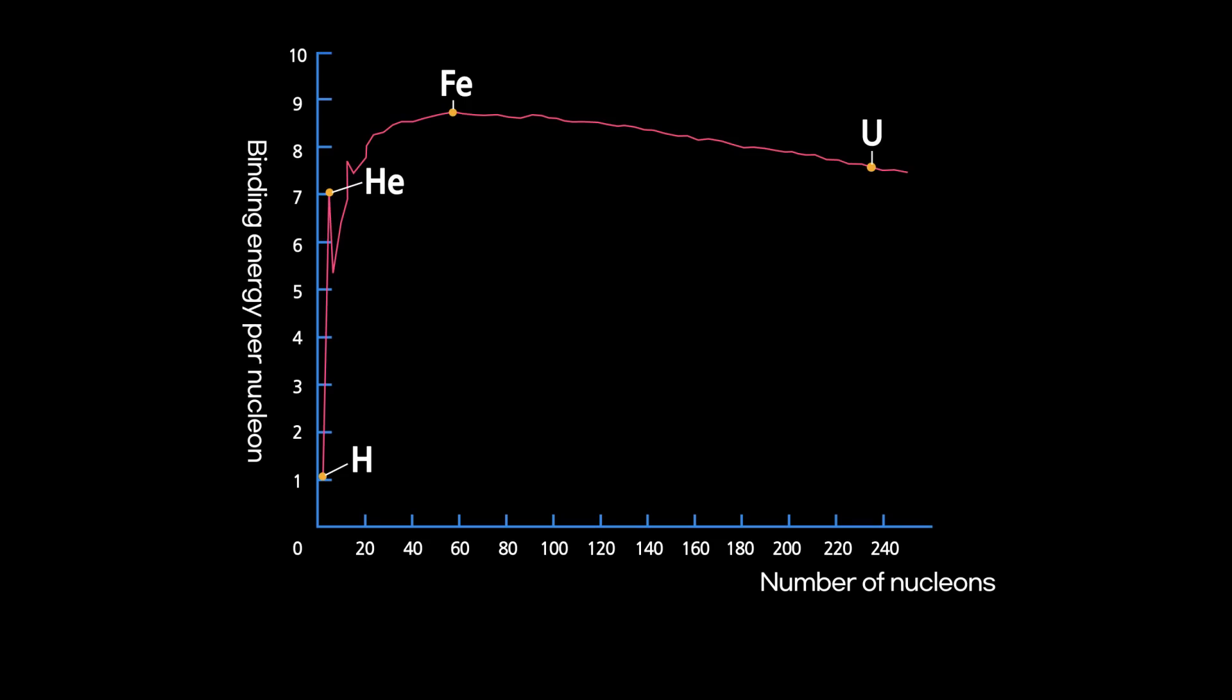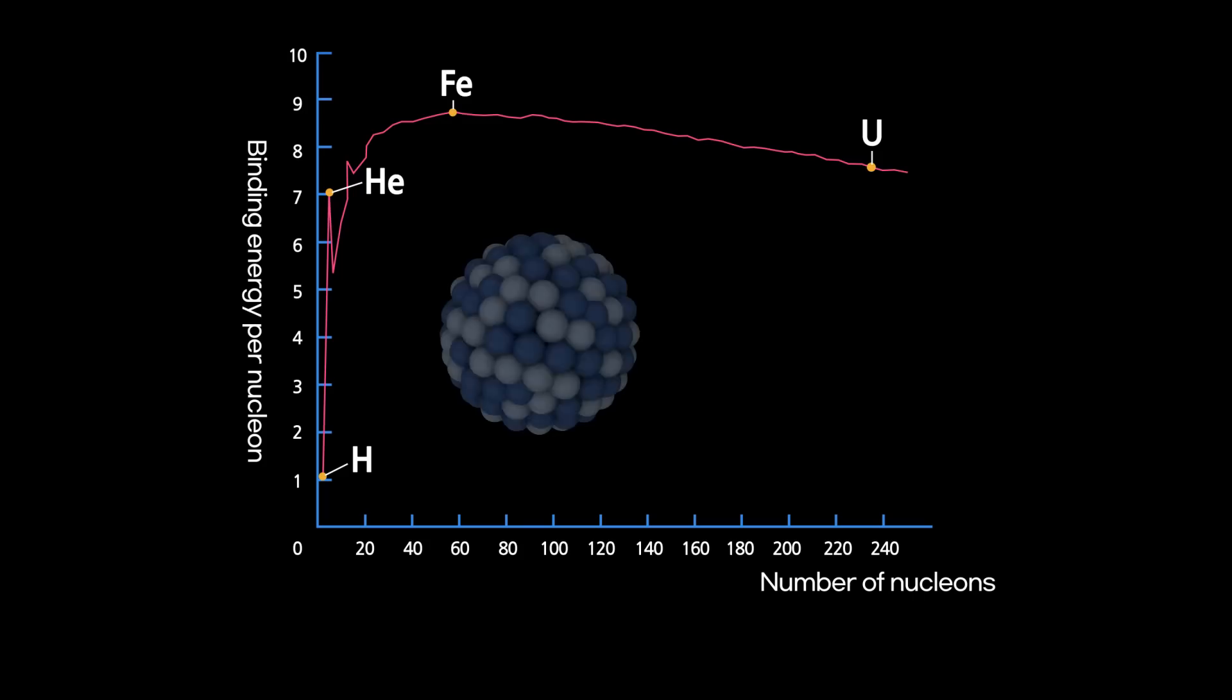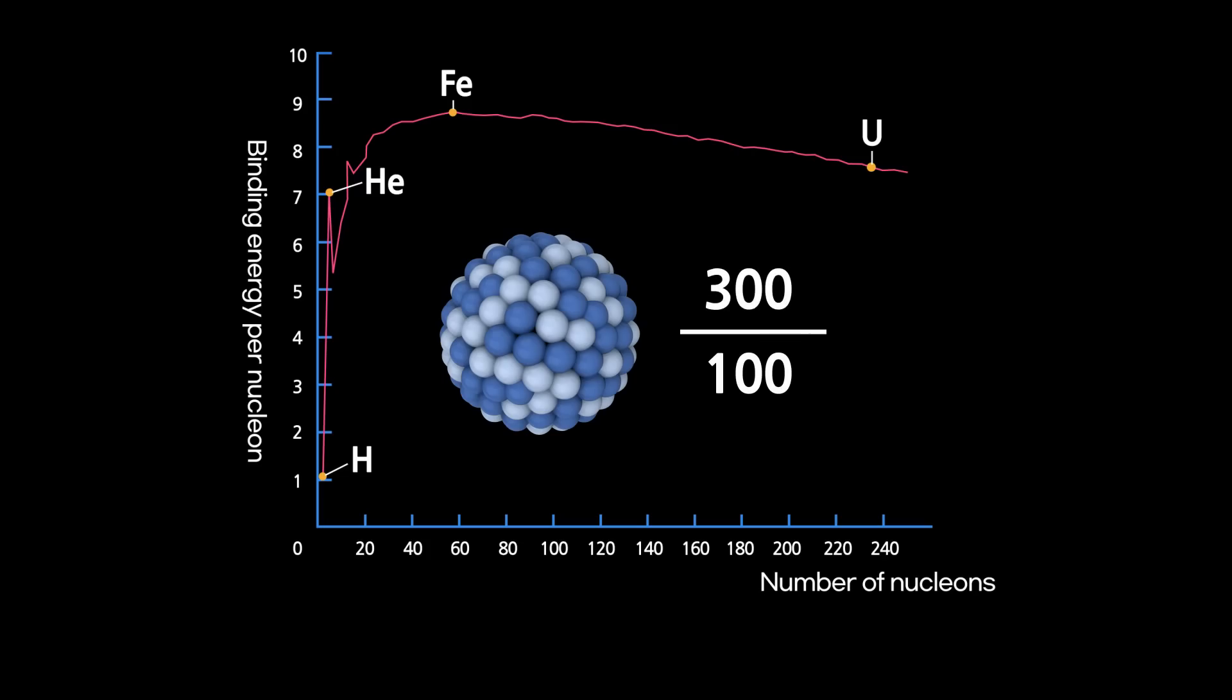This graph shows the bonding energy per nucleon and the number of nucleons. Bonding energy per nucleon means the bonding energy of each nucleon. For example, if the nucleon number of element X is 100 and the bonding energy of its nucleus is 300, the bonding energy per nucleon is 3.